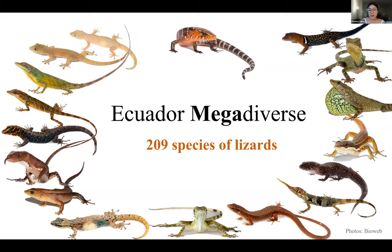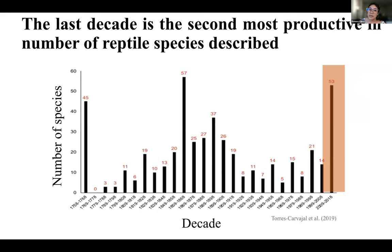Ecuador is a megadiverse country, and this is especially true for lizards. We have around 200 species of lizards, and many of these species have been described during recent years. In this histogram, you can see the number of reptile species described every 10 years. There are three important peaks — one of the highest is around the 1850–1860s when naturalists were collecting and describing reptile species from Ecuador. The second important peak is in the last decade, which is now the second most productive period for reptile species described, with Gymnophthalmidae being a major focus.